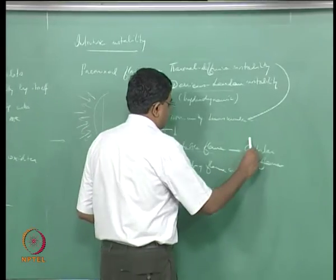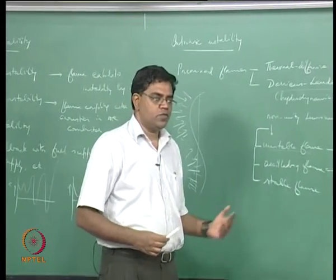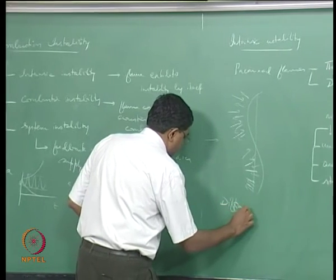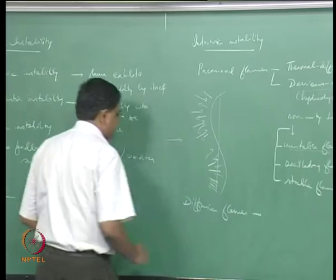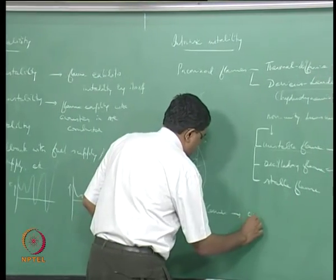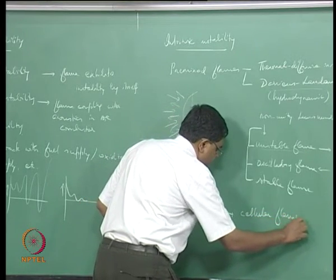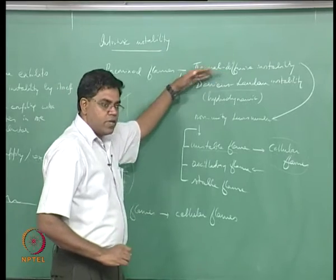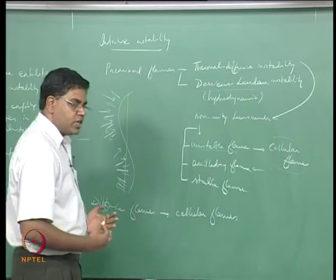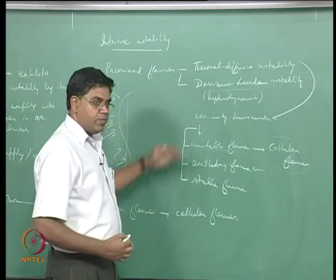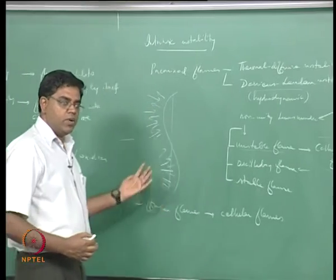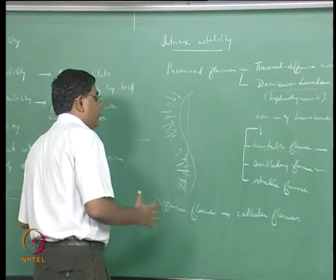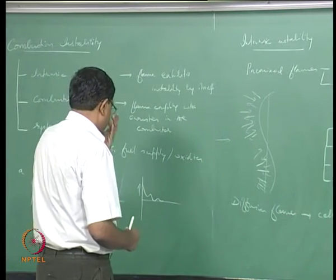Cellular flames are also observed for diffusion flames — this is diffusion flame instability. Thermal-diffusive instability is predominant in diffusion flames because diffusion effects are important there. Darrieus–Landau instability is less common in diffusion flames because the density jump is not as pronounced as in a premixed flame, though in reality both mechanisms can prevail to varying extents.